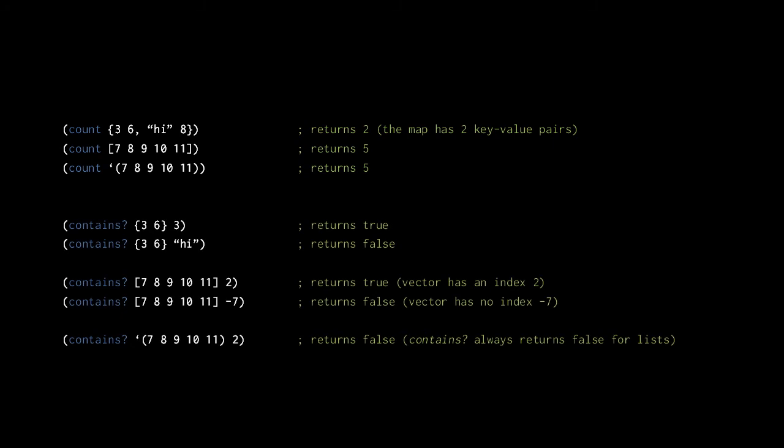The first call to contains? returns true because the map argument does have a key which is the number three. The second call returns false because the map argument does not have a key which is the string "high". The third call returns true because the vector does have an index two, but the fourth call returns false because the vector has no index negative seven. This last call to contains? also returns false because contains? always returns false for a list argument.